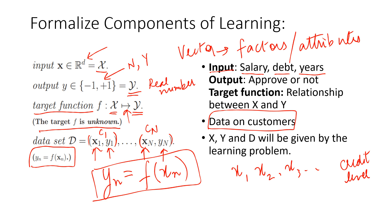I know that the target is unknown, but I have examples that are really illustrating what f could be. For inputs x1, x2, …, xn, we have managed to obtain y1, y2, …, yn. We can establish that each yi is f of xi. Now, the question of where we get data from will remain with us throughout, but the assumption going forward is that we always have data. That's why I'm putting a star there — this is something that I'll always have.